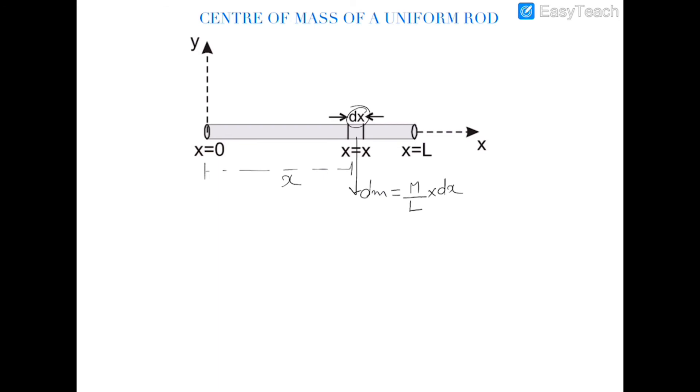So the x coordinate of the center of mass will be equal to integration of x into dm upon integration of dm. So this is equal to integration x into dm. Now dm is equal to m upon l into dx, divided by the total mass of the rod is m. You can write directly this as integration of dm as m.